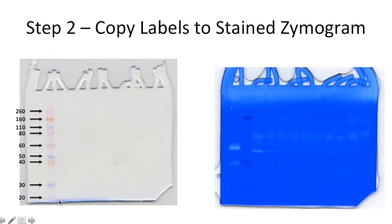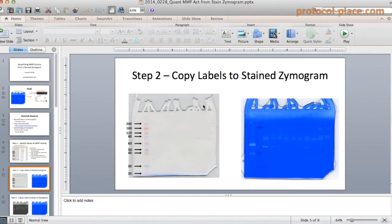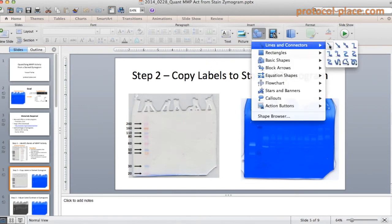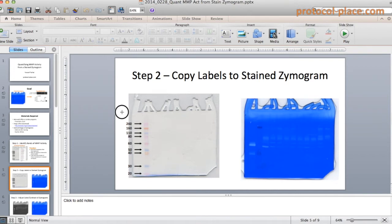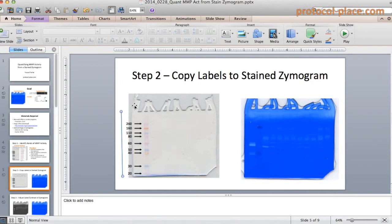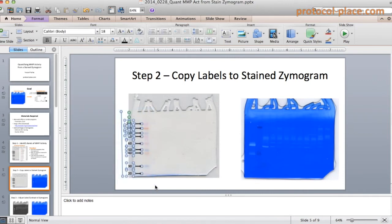After we've done that, we're going to copy these labels and paste them into the picture of our stained zymogram. The first thing I would do is take a line and draw from the top of the zymogram down to the bottom of it, ignoring these extra lanes. Then I would select all of these text boxes, arrows, and the line that I just drew.